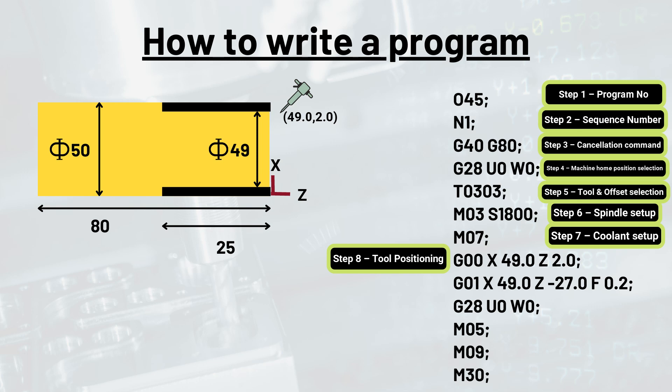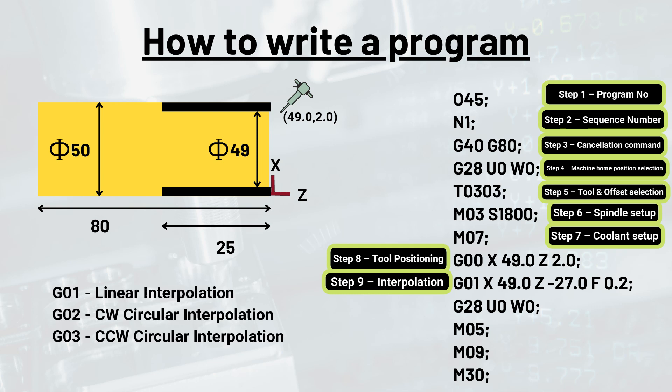The next step is the interpolation. In this step we decide the deciding command between G01, G02, and G03. G01 is for linear interpolation, G02 is for clockwise circular interpolation, and G03 is for counterclockwise circular interpolation. Since linear interpolation is seen in this case,